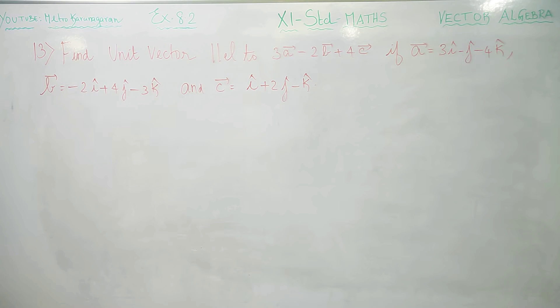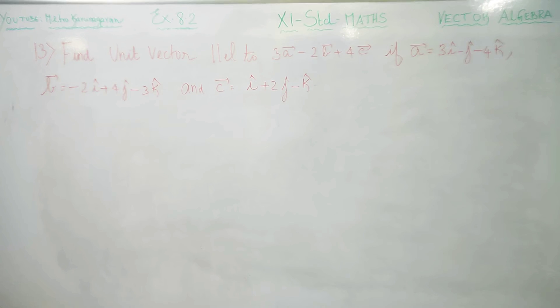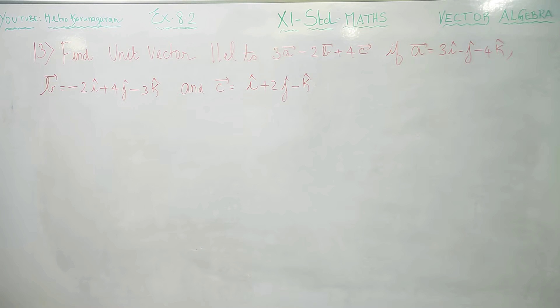Dear 11th standard students, in exercise number 8.2 sum number 13, find the unit vector parallel to 3a minus 2b plus 4c.